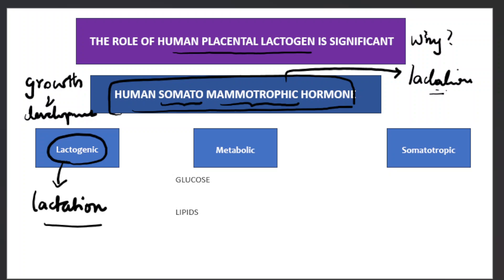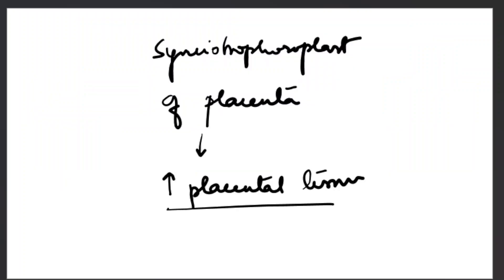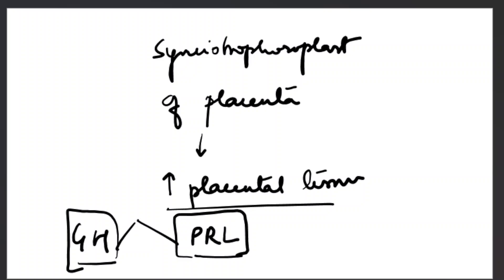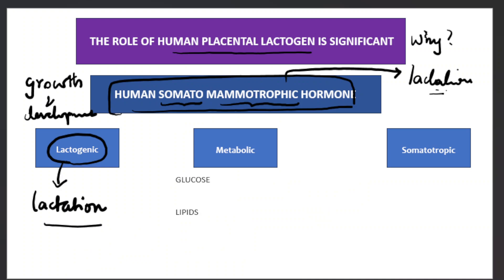Since it is called the human somatomammotrophic hormone, two other hormones come to mind: somatotrophic hormone, which is growth hormone, and lactogenic hormone, which is prolactin. Human placental lactogen is homologous in both structure and function to these two hormones — growth hormone and prolactin.